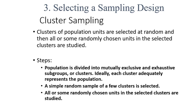The next technique in probability sampling is cluster sampling. Clusters of population units are selected at random, and then all or some randomly chosen units in the selected clusters are studied. The population is divided into mutually exclusive and exhaustive subgroups or clusters, and ideally each cluster equally represents the population. A simple random sample of a few clusters is selected, and all or some units within those clusters are studied.